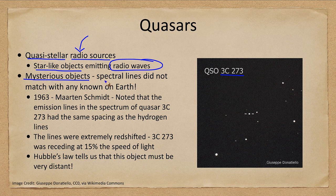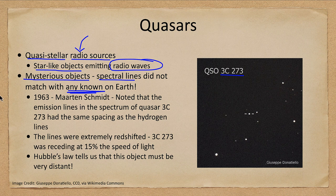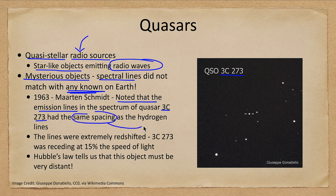Quasars were very mysterious because they had spectral lines that did not match any known elements on Earth. Early on we found a new element in the sun that was not known on Earth — that was helium, named after helios for the sun. However, at this point we knew the periodic table and there were no missing elements that we could assume quasars were made up of. Martin Schmidt in 1963 noted that the emission lines in the quasar 3C273 had the same spacing as the hydrogen lines.